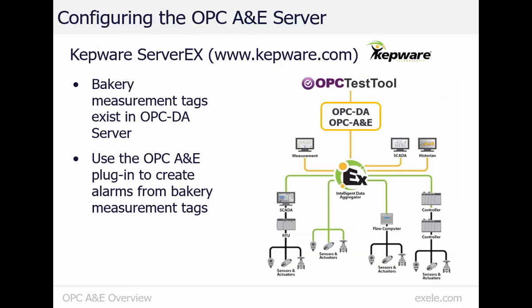To demonstrate the OPC Test Tool, we wanted to show both the measurement values through OPC DA and the alarms created from these measurement values in OPC Alarms and Events. To do this, we're using a Kepware OPC DA server with the OPC Alarms and Events plugin. Our bakery mixing speeds and oven temperatures are measurement values retrieved from instrumentation and available in a programmable controller. We've used Kepware to access the values within the controller and expose them through OPC DA. The Kepware Alarm and Events plugin allows us to create OPC A&E events from OPC DA tags, which we used to create the level and rate of change alarms for our bakery.